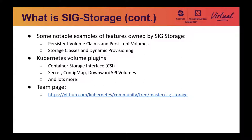SIG Storage has been working on migrating from in-tree volume plugins to out-of-tree CSI drivers. New features are only added to CSI drivers. Other than persistent volumes, there are also ephemeral volumes. An ephemeral volume is specified directly in a pod spec. It's mounted on the pod as a directory. Data can be stored in a file under that directory. Ephemeral volumes include secrets, config maps, and generic ephemeral volumes, and so on. Its lifecycle follows the lifecycle of a pod.